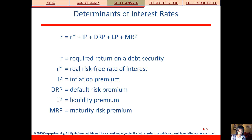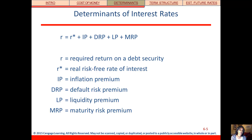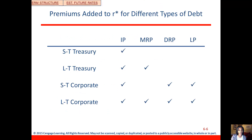The default risk premium is an extra cost to compensate for the possibility that the issuer defaults on their interest payments. A liquidity premium is an extra cost that we add because we might have a fear that we can't resell the security if we needed to get cash. And then a maturity risk premium is related to the time horizon of the investment, or the time until that security matures.